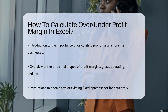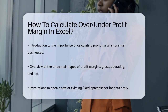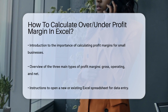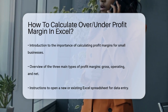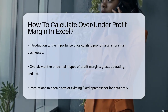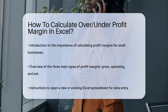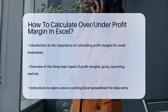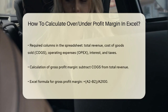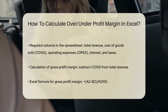To start, open Microsoft Excel and create a new spreadsheet or open an existing one with your data. You'll need columns for your total revenue, cost of goods sold (COGS), operating expenses (OPEX), interest, and taxes.